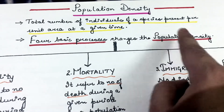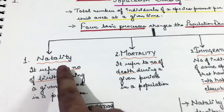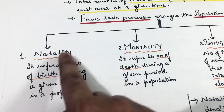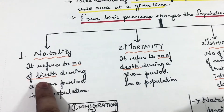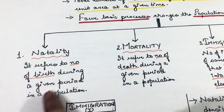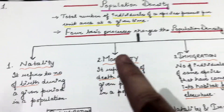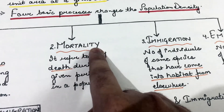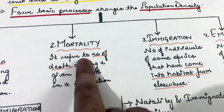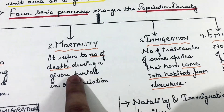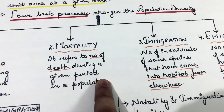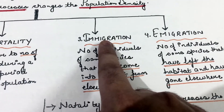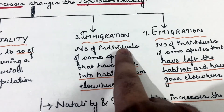Number one: the first process that changes population density is natality. Natality refers to the number of births during a given period in a population. The second process is mortality. Mortality refers to the number of deaths during a given period in a population.